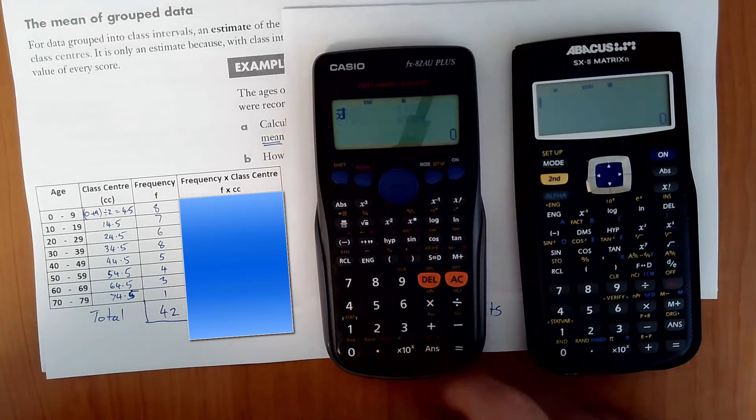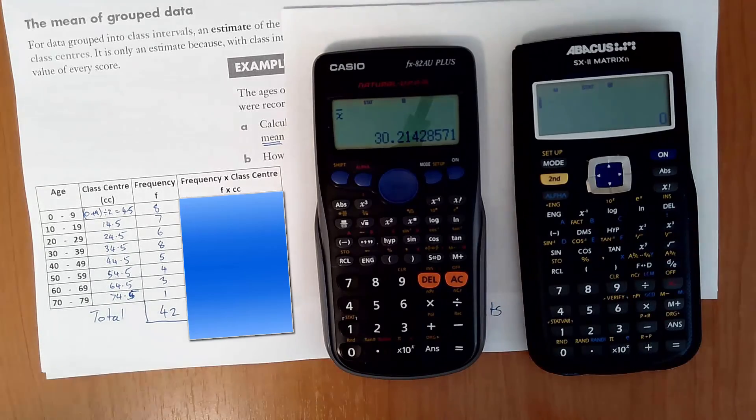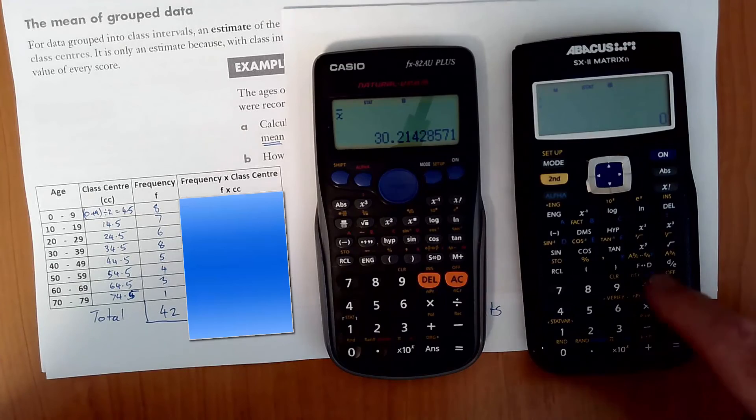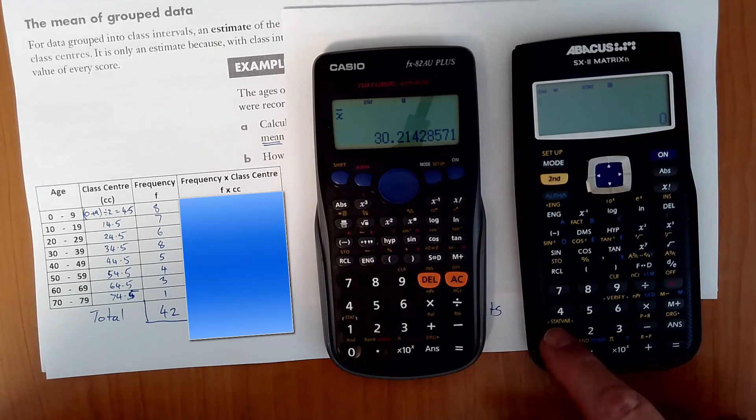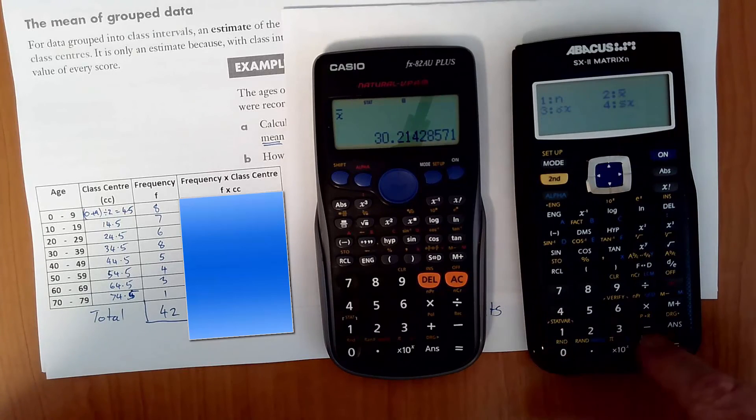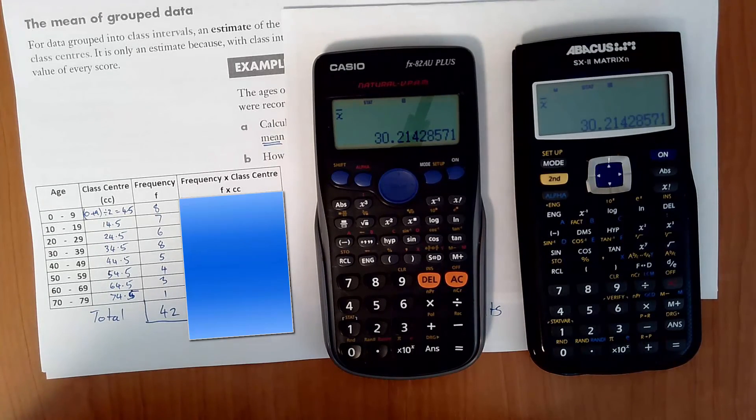So press number 4. And it comes up and says XBAR equals 30.2. Okay. On this calculator, exactly the same. Second function, STAT, number 4, number 2 equals 30.2. And that's how we calculate the mean using the statistics functions on our calculator.